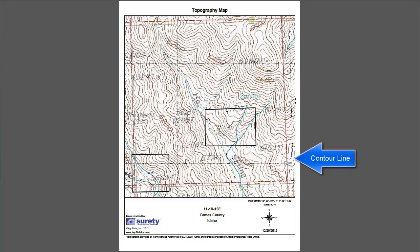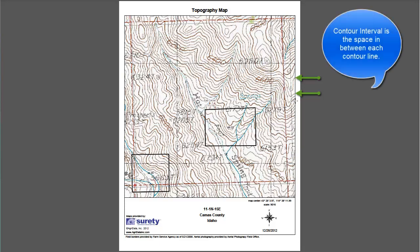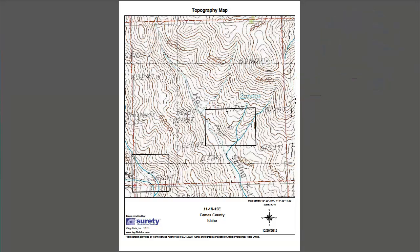Contour lines illustrate the elevation. The spacing in between the contour lines is referred to as a contour interval. Topography maps in Surety can either be 5-foot or 10-foot intervals, and can be determined by looking at the numbers on the contour lines, and it will remain relatively constant if you follow the line.